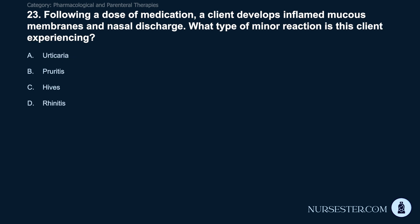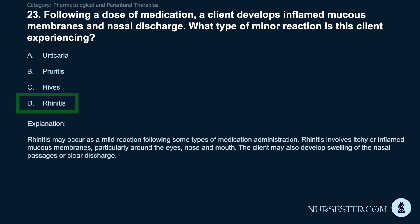Question 23: Following a dose of medication, a client develops inflamed mucous membranes and nasal discharge. What type of minor reaction is this? A) Urticaria. B) Pruritus. C) Hives. D) Rhinitis. Correct answer: D. Rhinitis. Rhinitis may occur as a mild reaction following some types of medication administration. It involves itchy or inflamed mucous membranes, particularly around the eyes, nose, and mouth. The client may also develop swelling of the nasal passages or clear discharge.